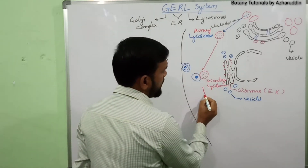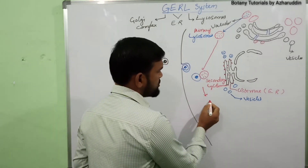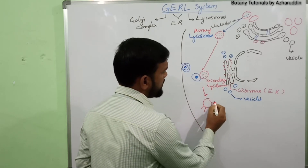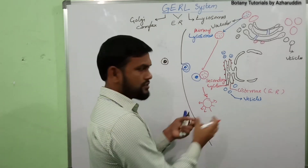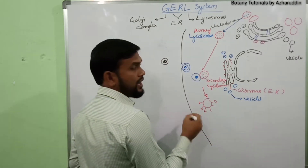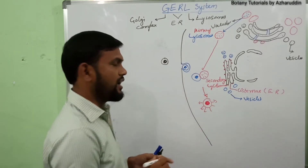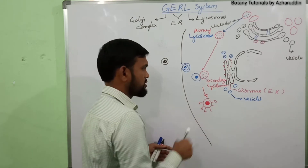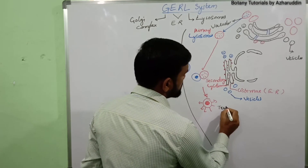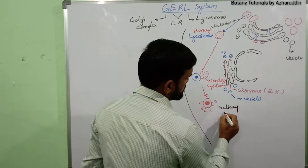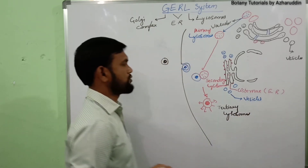The active enzymes work on the food particle, leading to the formation of simple substances. These simple substances are absorbed by the cell. The undigested material remains present in the lysosome, and at this stage these lysosomes are called tertiary lysosomes.